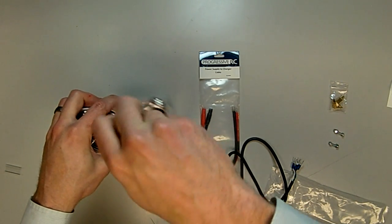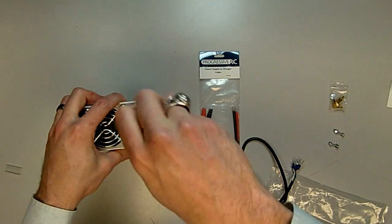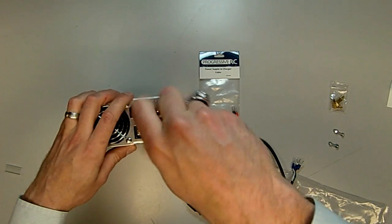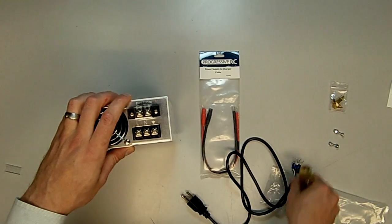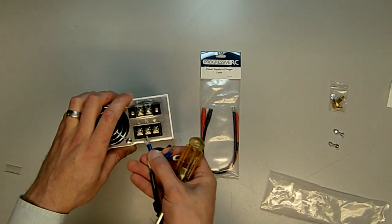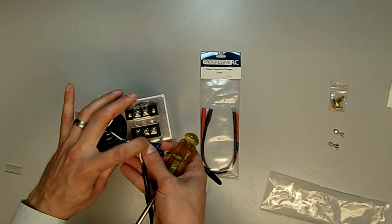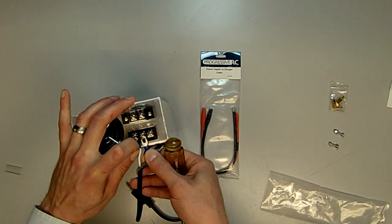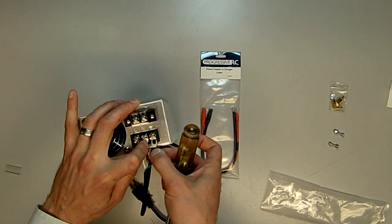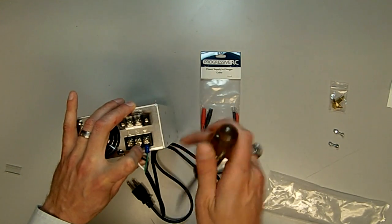The green wire will connect to ground, which is noted as a small ground symbol or kind of an upside down tree symbol there on the back of the power supply. So lining these up: white to the L, black to the N, and the green onto the ground.